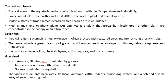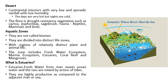Next is the grassland biome, covering North America and Ukraine, dominated by grasses under temperate conditions with rather low rainfall. Fauna includes large herbivores like bison, antelope, cattle, rodents, prairie dogs, wolves, and a rich diversity of ground-nesting birds. Next is the desert biome — continental interiors with very low and sporadic rainfall and low humidity. Days are very hot but nights are cold. Flora is drought-resistant vegetation such as cactus and euphorbia. Fauna includes reptiles, mammals, and birds.